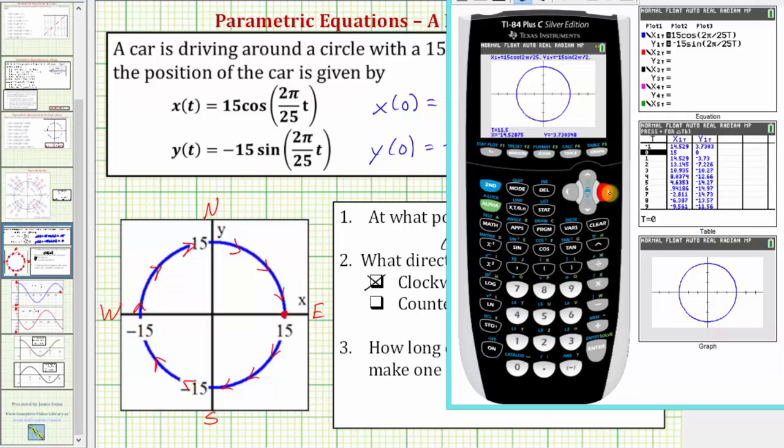Of course, another option would be to make a table of values or use the table of values from the graphing calculator. If we press second graph, we can select several values of t, find the x and y coordinates, and then plot the points on the circle to see what direction the curve is traced.